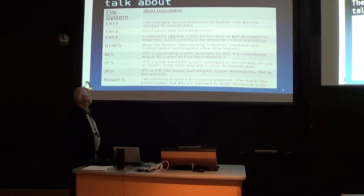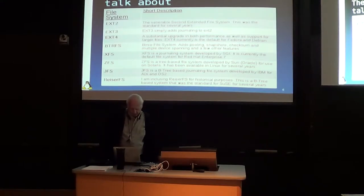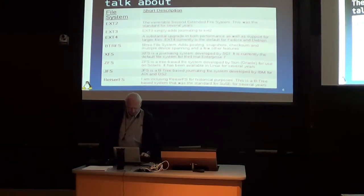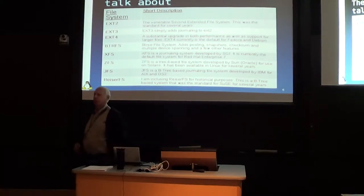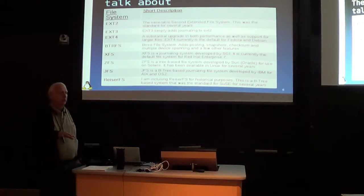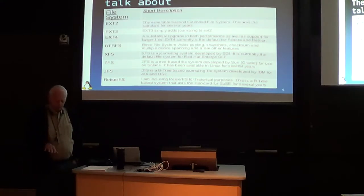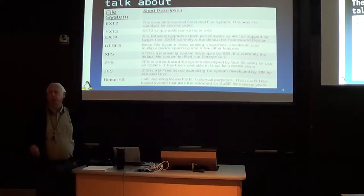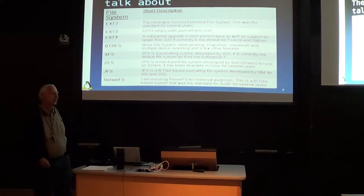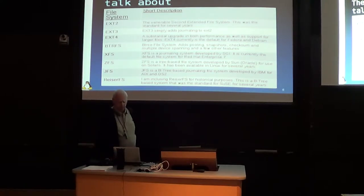The file systems I'm going to talk about primarily are EXT2, which has been around a long time — it's called the second extended file system and was the standard for several years. EXT3 was a slight improvement over EXT2, basically EXT2 with journaling added. It was also backward compatible, so you could take an existing EXT2 file system, tell it it's EXT3, and it would automatically start journaling.